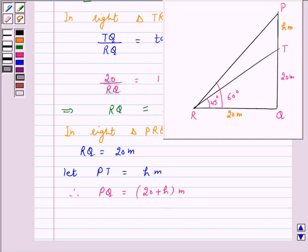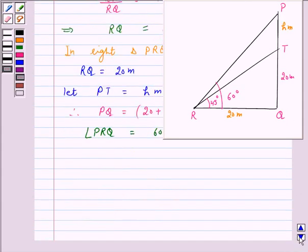Again, angle PRQ is equal to 60 degrees. Now we want to find PQ. So we have PQ upon RQ is equal to tan 60 degrees.